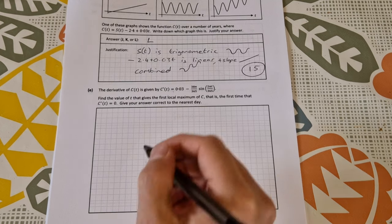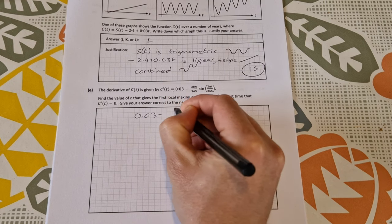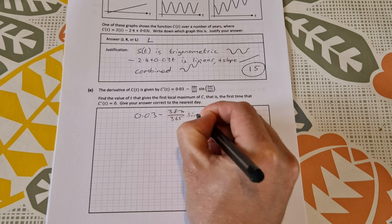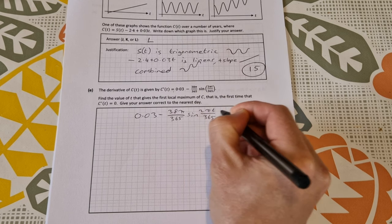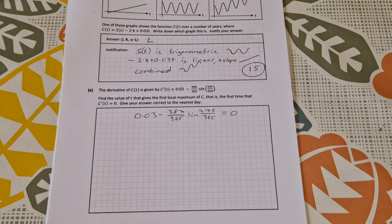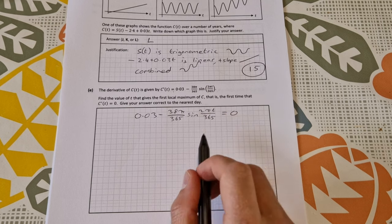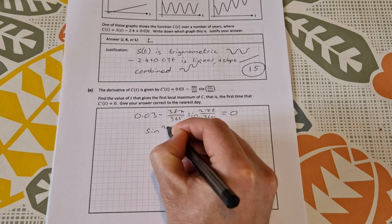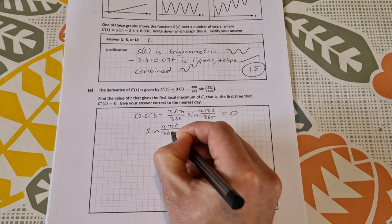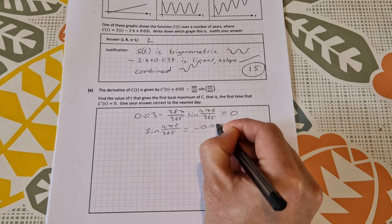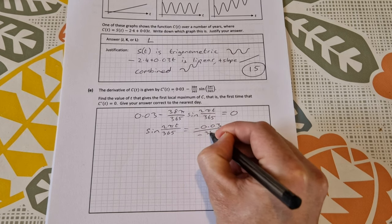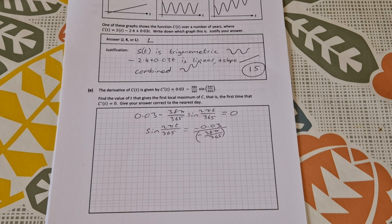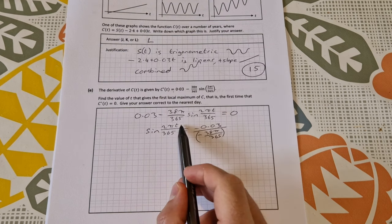So that is 0.03 minus 38π over 365 sine(2πt over 365) equals zero. There's a bit of work in this. I'm going to isolate this bit here, that's the only bit with the t. I'll subtract this from both sides and then divide both sides by this. I can do that all in one go to get sine(2πt over 365) equals minus 0.03 divided by minus 38π over 365.